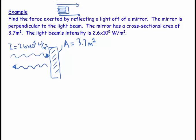Our principle is that for reflection, the pressure is equal to 2 times the Poynting vector over the speed of light. And we also remember that our intensity is equal to our average Poynting vector.